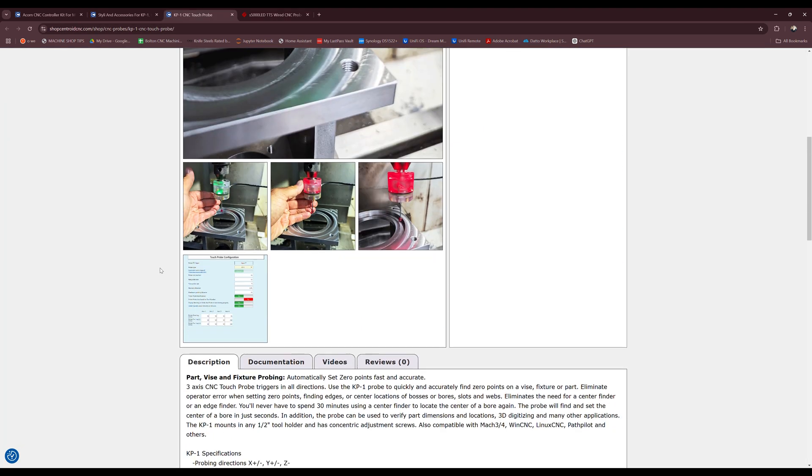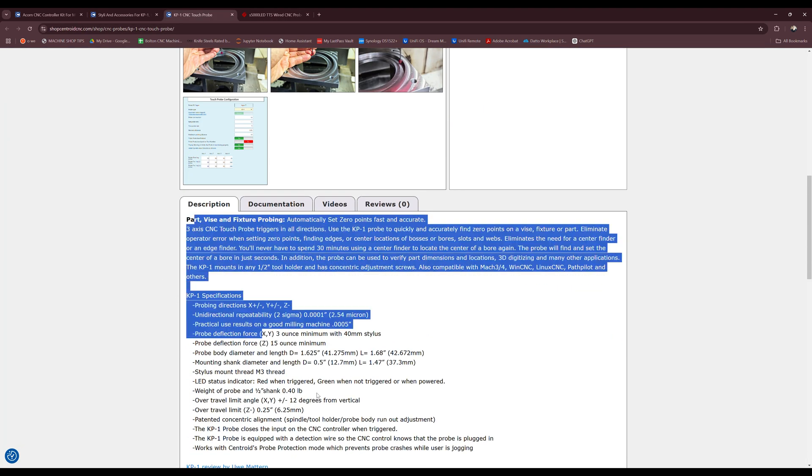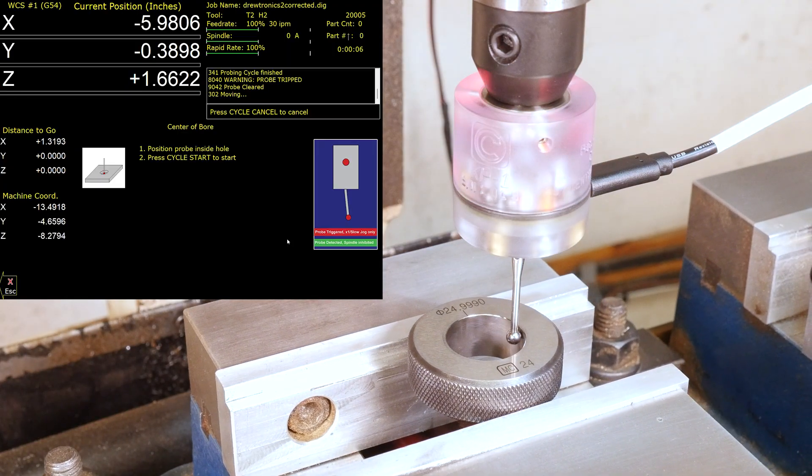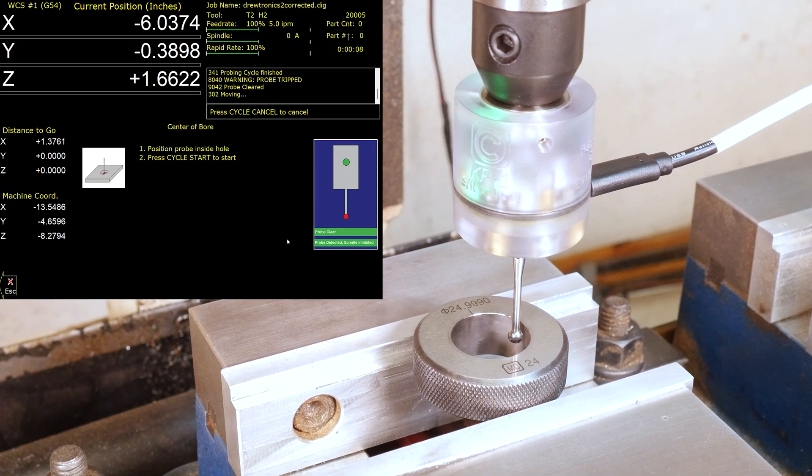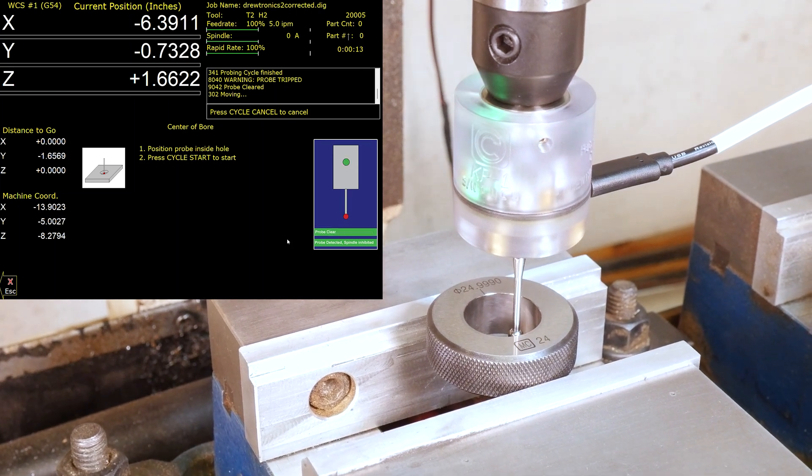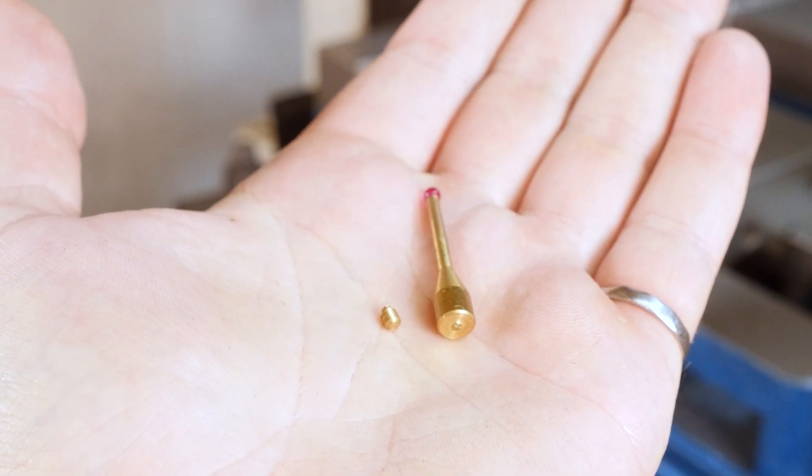Right out of the gate the KP1 advertises better performance which we're going to test for ourselves but it also includes things like a probe detection signal which in my opinion should really come on every probe. It's an added layer of security against the probe crash and guaranteed will save you at some point.